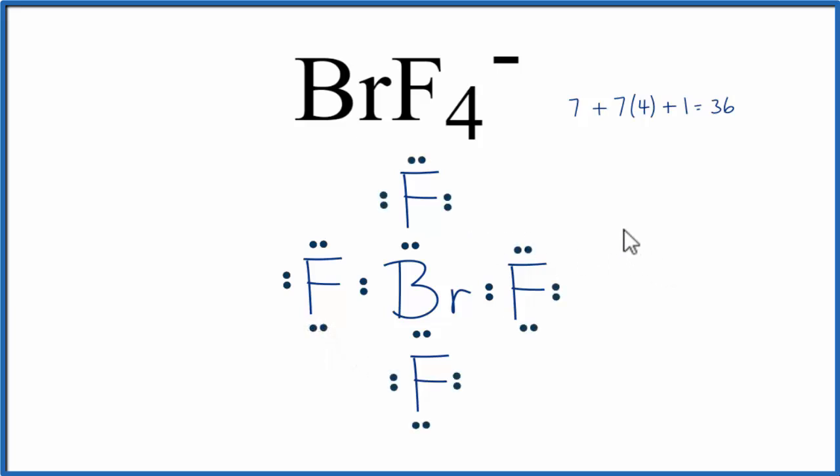At this point it looks like a pretty good Lewis structure. Each atom has an octet, but we're only using 32 valence electrons, and we have 36 for the BrF4- Lewis structure.